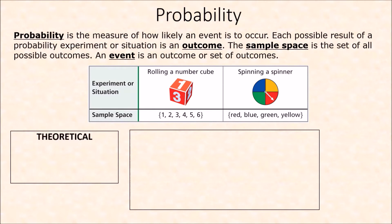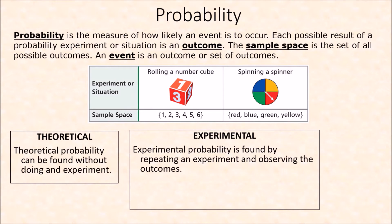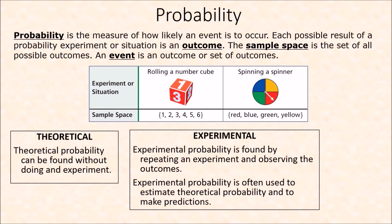Theoretical probability can be found without doing an experiment. For example, given a die, you already know it has six possible outcomes. One side is the number three, so to get a number three you already know you have only one chance. You don't need to roll the dice again and again — that's what we call theoretical probability. If you do perform the experiment, then you are finding experimental probability, which is found by repeating an experiment and observing the outcomes. Experimental probability is often used to estimate theoretical probabilities.